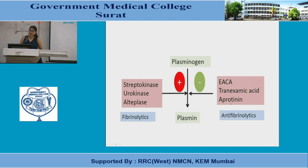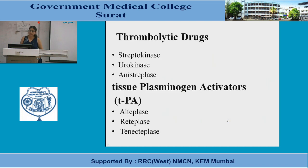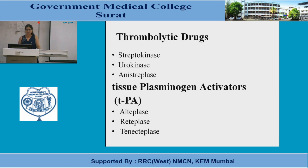The anti-fibrinolytic agents — epsilon aminocaproic acid, tranexamic acid, and aprotinin — prevent the conversion of plasminogen to plasmin, thereby preventing fibrin lysis. The fibrinolytic drugs, in contrast, lyse the formed fibrin. Thrombolytic drugs include streptokinase, urokinase, anistreplase, and the tissue plasminogen activator group represented as tPA — alteplase, reteplase, and tenecteplase.